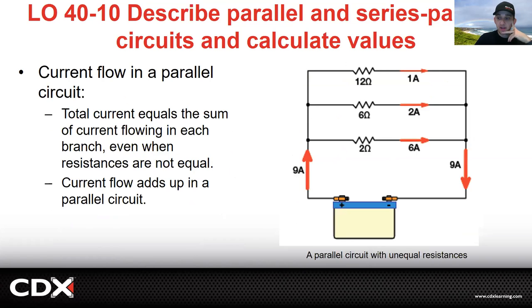Current flow in a parallel circuit: total current equals the sum of current flowing in each branch, even when resistances are not equal. As you can see here, these resistances are different. We've got a 2 ohm, a 6 ohm, and a 12 ohm. But total current equals added up all of the current flowing in each branch. So if you look here, we have 9 amps of current going in. We have 1 amp coming out after this resistance, 2 amps after this resistance, and 6 amps after this resistance. The 12 ohm resistor used more amperage—it slowed the current down. The 6 ohm resistor is a little bit less. The 2 ohm is less resistance, so more amperage could flow through. But when they join back up and come back to the power source or to ground, it's 9 amps again.